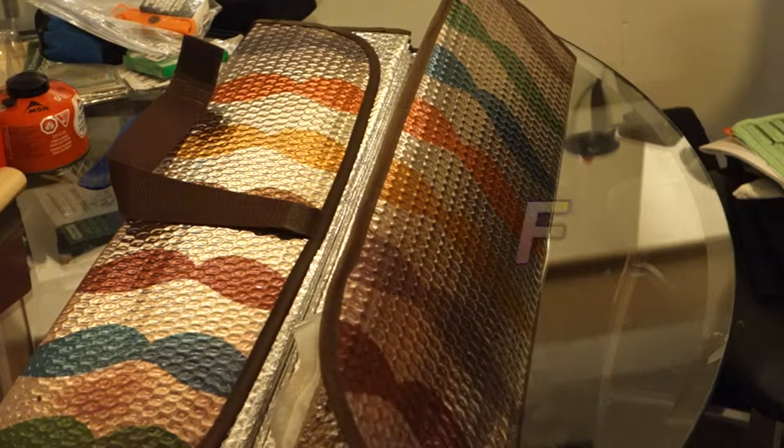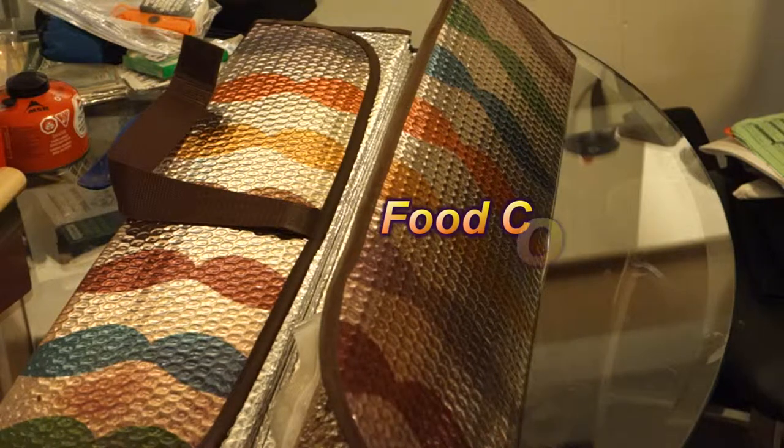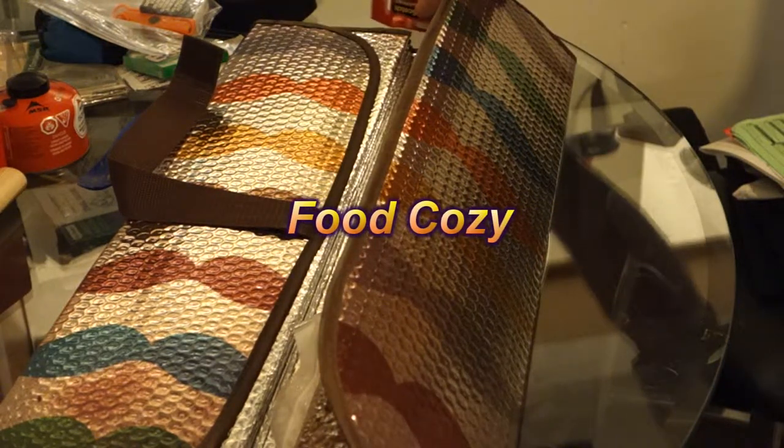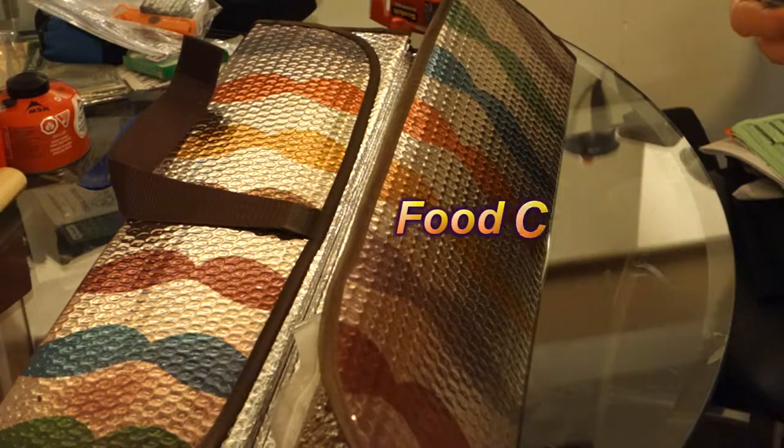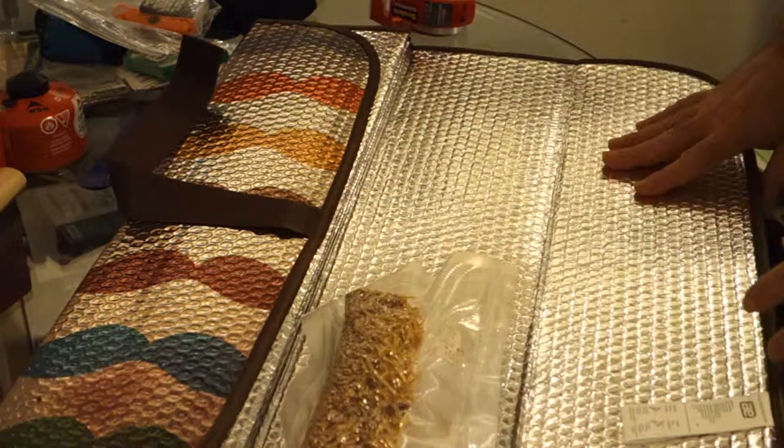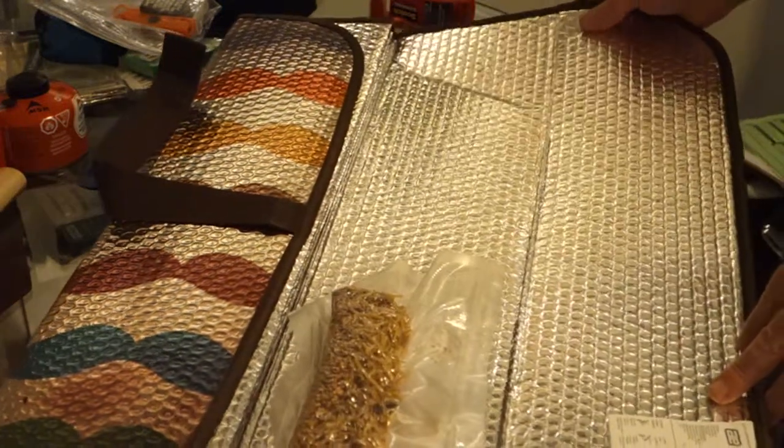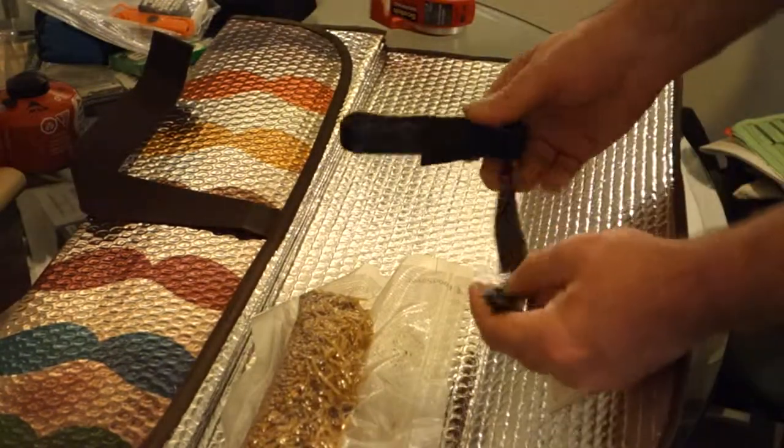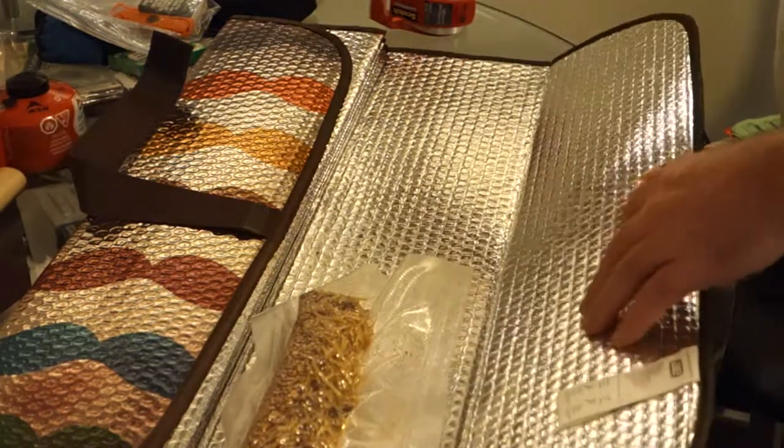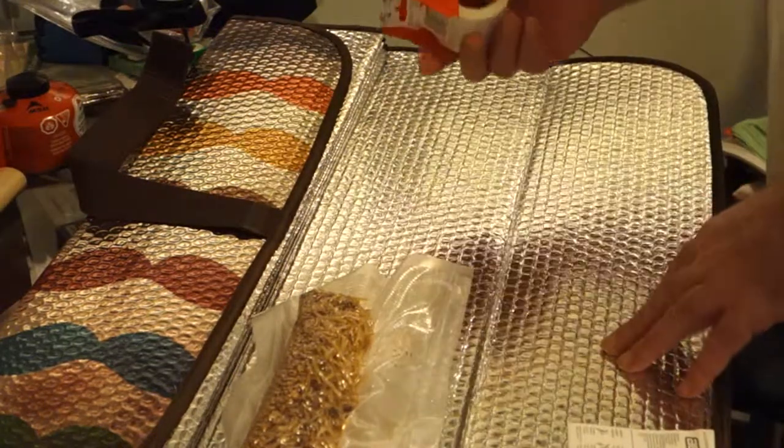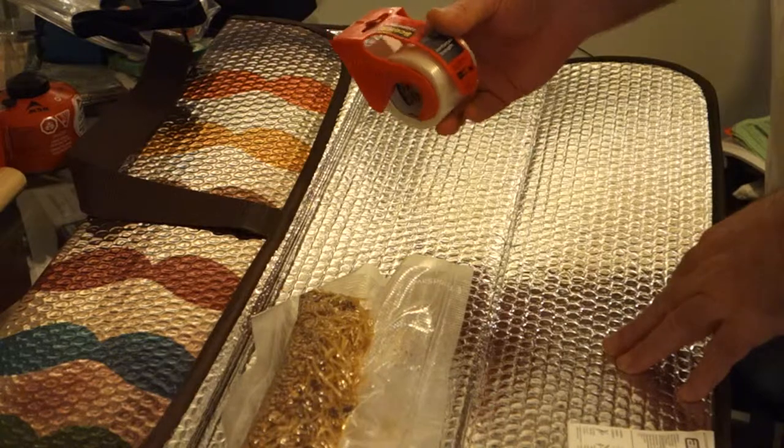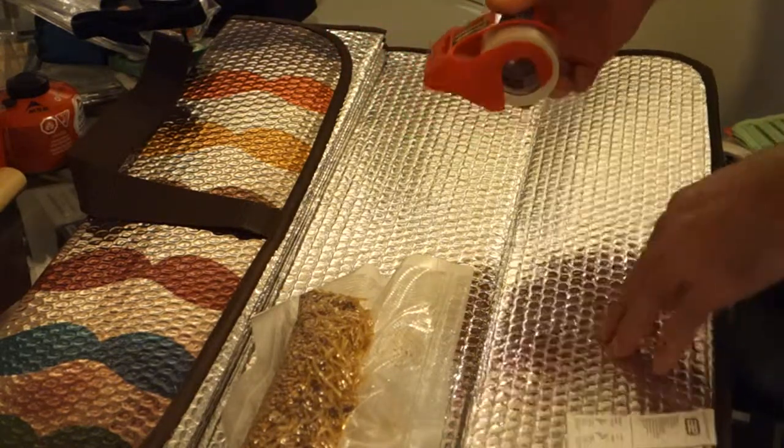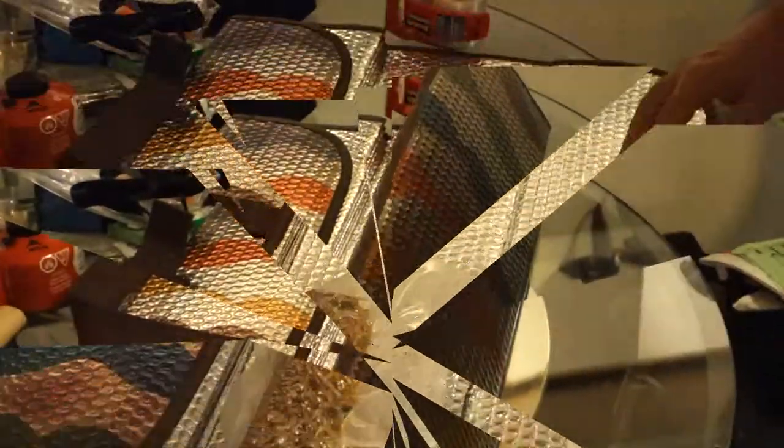Alright folks, I'm going to show you how to make a pot cozy for your ultralight backpacking meals that you do yourself with a dehydrator and vacuum sealer. You're going to need one of those car windshield screens, some hook and loop stick-on fastener, and some scotch packing tape or duct tape. Either one will work.